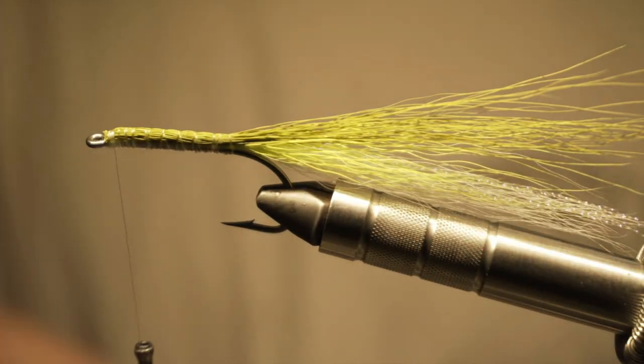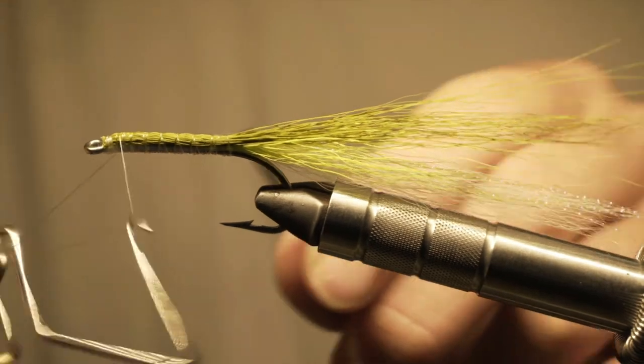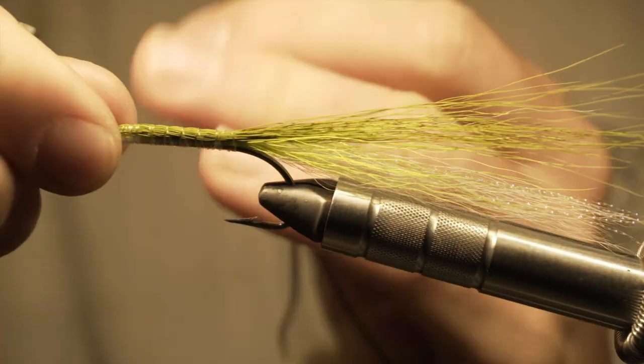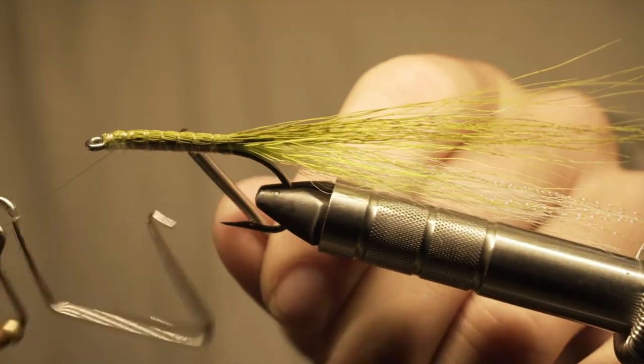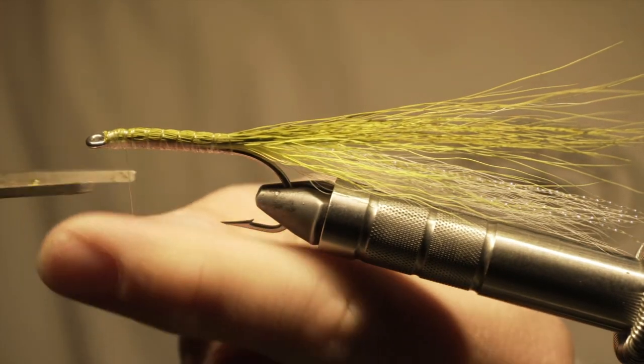And that's basically the finished fly, at least part one anyway. We're going to do a little whip finish and then we're going to move on to part two of this fly, which is epoxy.